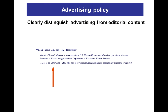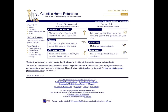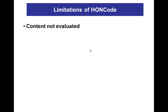A site complying with these principles is given a seal to place on its pages. It is important to know that HONcode is not an award system that rates the quality of the information or the content — it is only a set of standardized rules concerning editorial transparency.